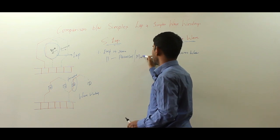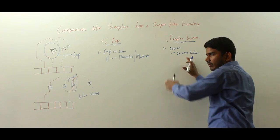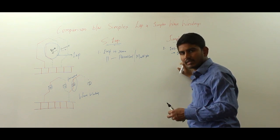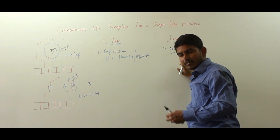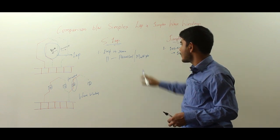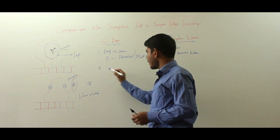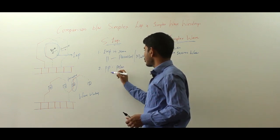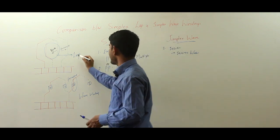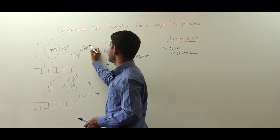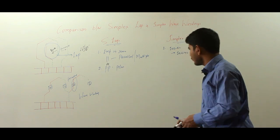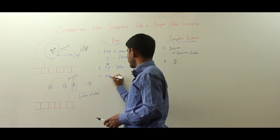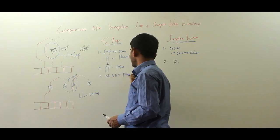Lap winding is also called parallel or multiple winding. Wave winding is a series winding where the current has basically two parallel paths — one path carries current in one direction and the other parallel path carries current in the other direction, but each parallel path carries current in the same direction and they are connected in series. The second difference is the number of parallel paths: in simplex lap winding, the number of parallel paths equals the number of poles. In simplex wave winding, the number of parallel paths is always 2.